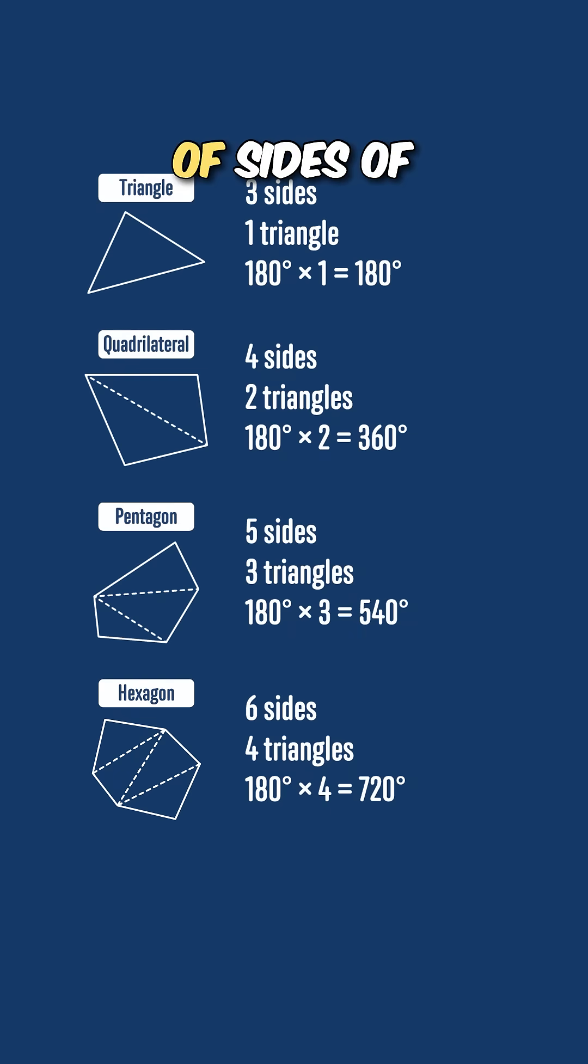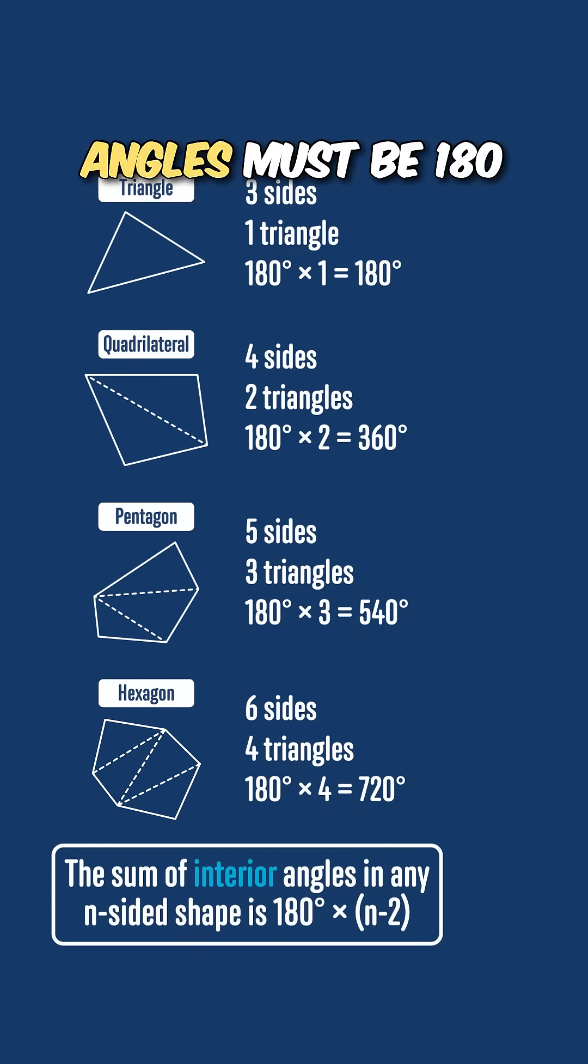So if we call the number of sides of the polygon n, then we can split the polygon into n minus two triangles, and so the sum of its interior angles must be 180 times n minus two.